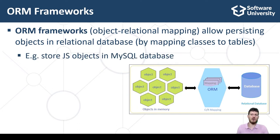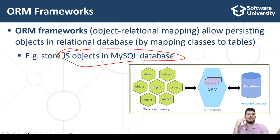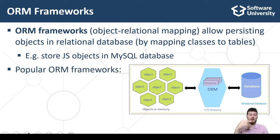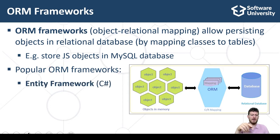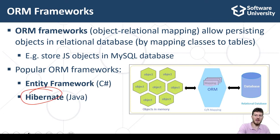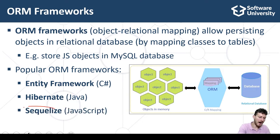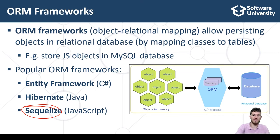Examples of using ORM systems include persisting JavaScript objects in a MySQL database, persisting Java objects in a PostgreSQL database, or persisting C# objects in an MSSQL database. Popular ORM frameworks include Entity Framework, the most popular ORM for C# and the .NET platform, Hibernate and Java Persistence API used in Java projects, and Sequelize, a popular server-side JavaScript ORM framework for persisting JavaScript objects in relational databases.